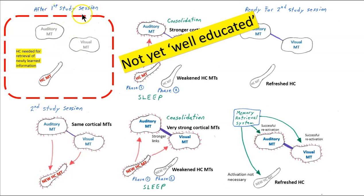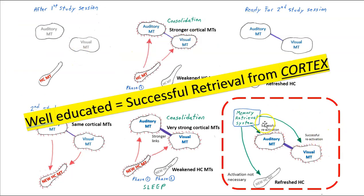After only one study session, we're not yet really well educated — we've got weak cortical memory traces, and we'll be dependent upon the hippocampus to access that information in our cortex. What we want to get to is the next stage: strong cortical memory traces. This is the well-educated mind — successful retrieval from the cortical memory retrieval systems, without needing the hippocampus to find and activate those cortical memory traces.